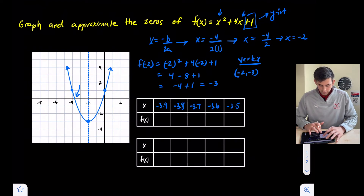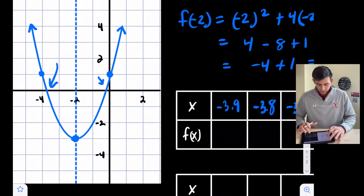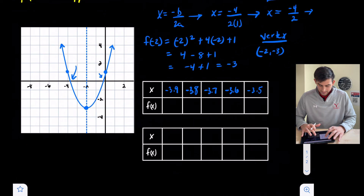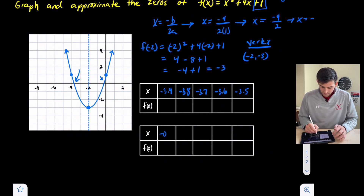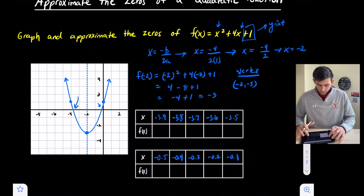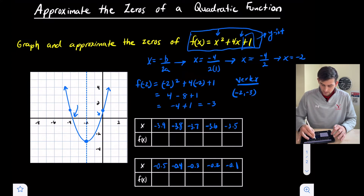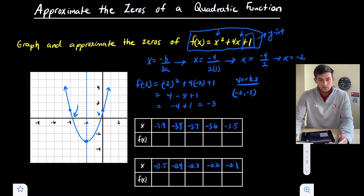For the second zero, it crosses between negative 1 and 0, and it looks closer to 0. So let's start at negative 0.5 and work our way to negative 0.1. We'll plug in those x values into our original equation using the calculator.